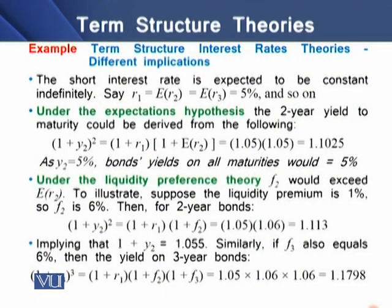To understand this, we have an example to see the implications of term structure interest rate theories. The short interest rate is expected to be constant indefinitely. If r1 = 5%, then we assume r2, r3, and so on will also equal 5%. Under the expectation hypothesis, the year 2 yield to maturity is derived by multiplying 1.05 × 1.05 = 1.1025, meaning y2 = 5%.